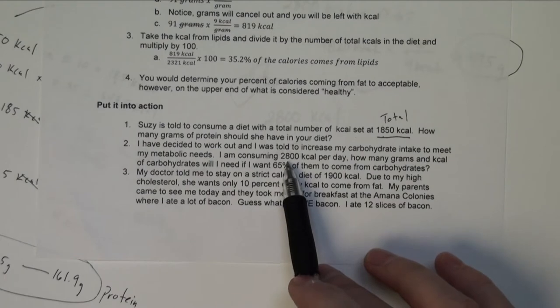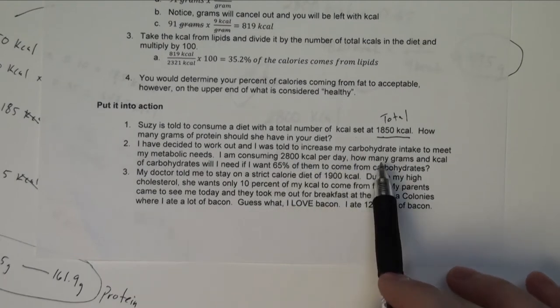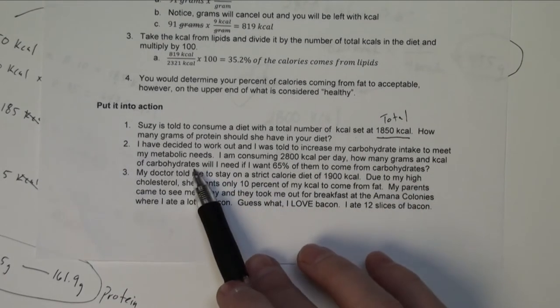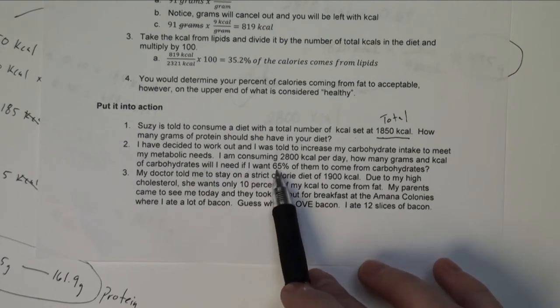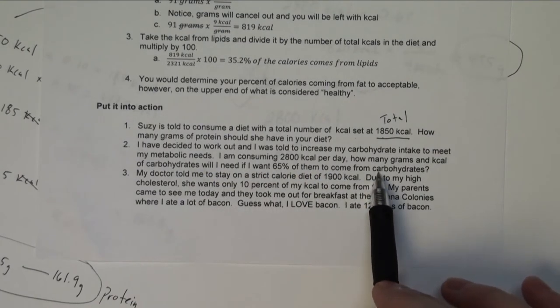And so I'm consuming 2,800 kilocalories per day. How many grams and kilocalories of carbohydrates will I need if I want 65% of them to come from the carbohydrates?